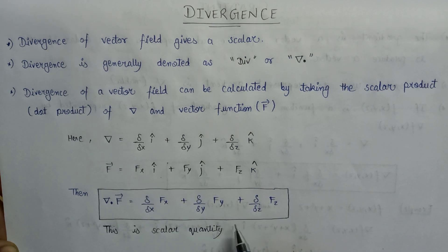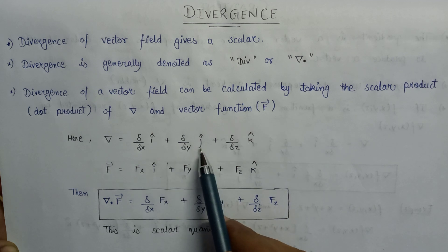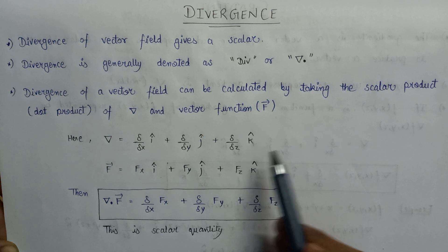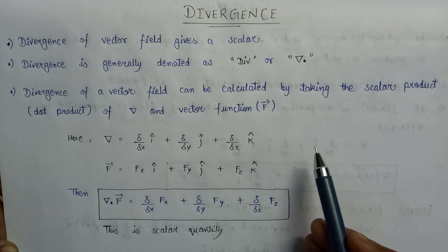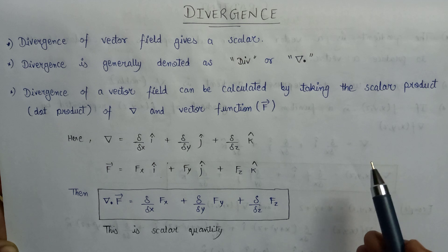And why it is a scalar quantity? Because it does not consist of any unit vector, that is i cap, j cap, and k cap for the specification of direction along x, y, and z axis. So this is all about the basic introduction of divergence.